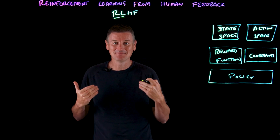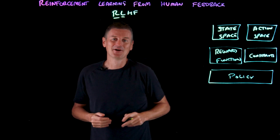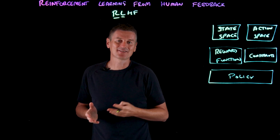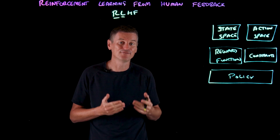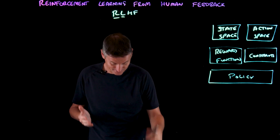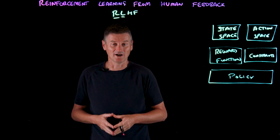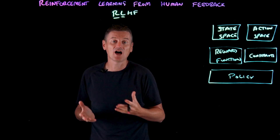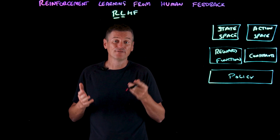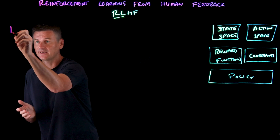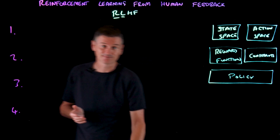So enter us human beings with RLHF, with its ability to capture nuance and subjectivity by using positive human feedback in lieu of formally defined objectives. In the realm of large language models, RLHF typically occurs in four phases. Let's take a brief look at each one.